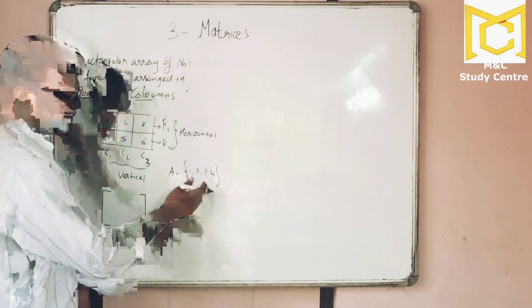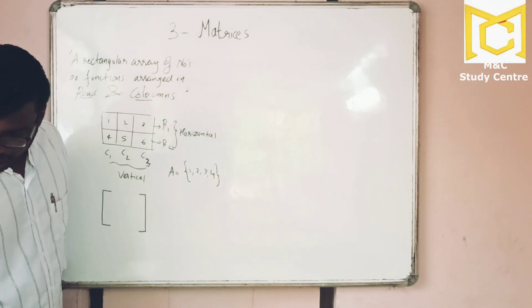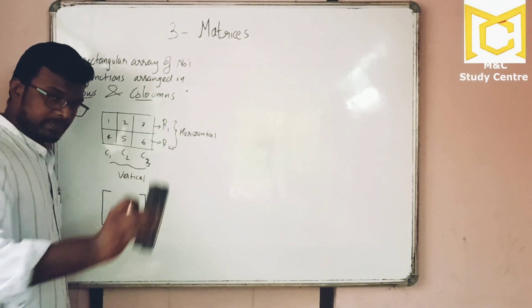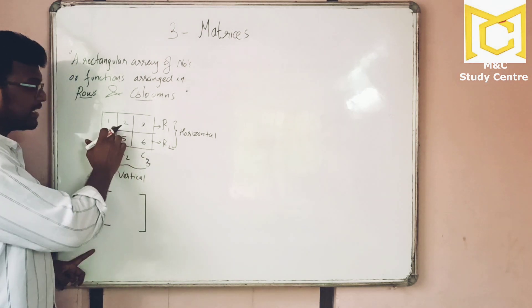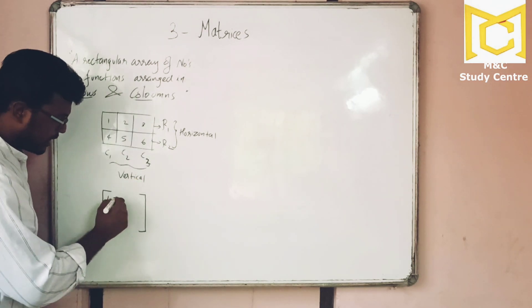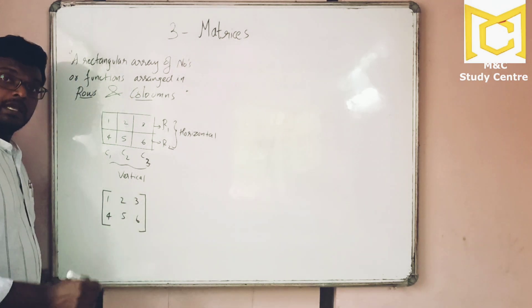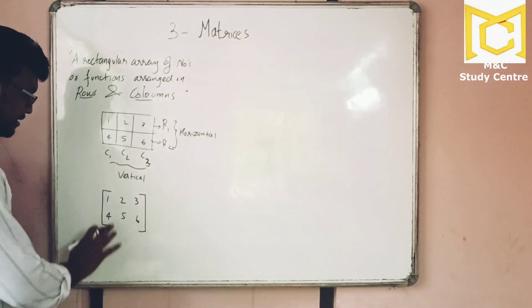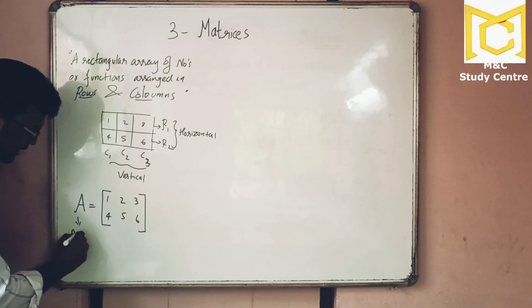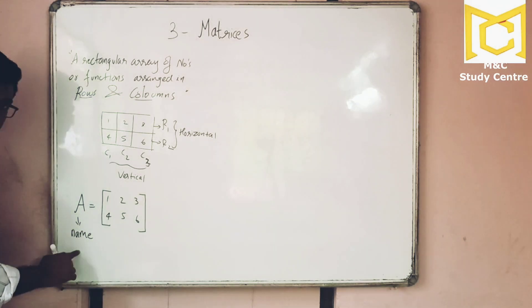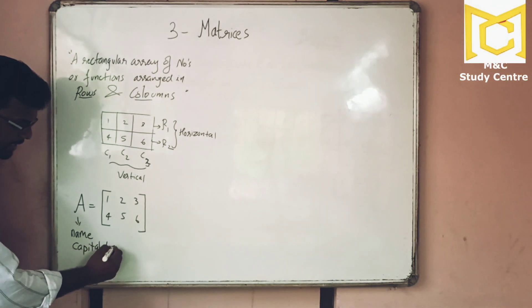What is a matrix? I am going to write a matrix. You put a square bracket and write these numbers: 1, 2, 3, 4, 5, 6. A matrix should have a name, and it should be written in capital letters.